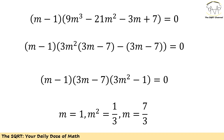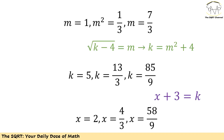Now I have values for m and need to find k and then x. Remember m equals radical(k minus 4), so m squared plus 4 equals k. Using the m values, k is going to be 5, 13/3, or 85/9. Since x plus 3 equals k, the corresponding x values are 2, 4/3, and 58/9.